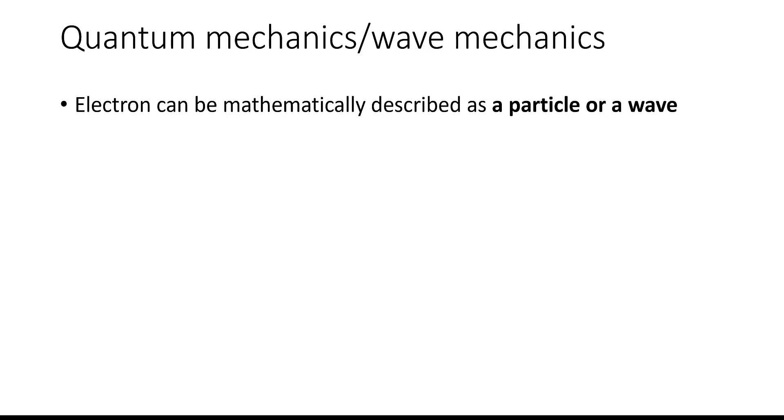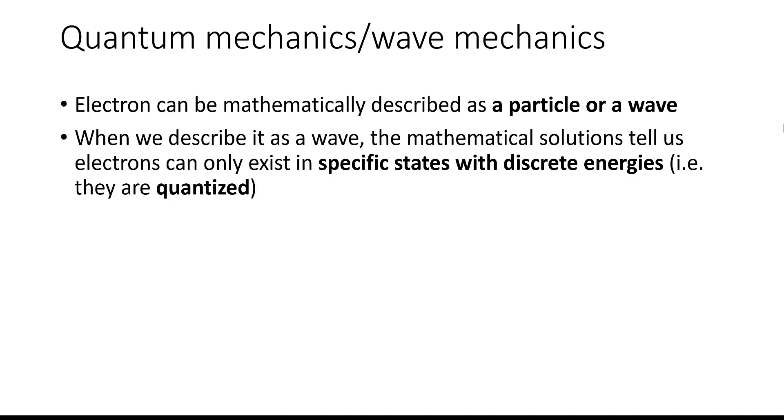Quantum mechanics, also known as wave mechanics, stems from the wave-particle duality of electrons, which states that electrons can be mathematically described as a particle or a wave. When we describe it as a wave, the mathematical solutions tell us that electrons can only exist in specific states with discrete energies, which means that they are quantized.